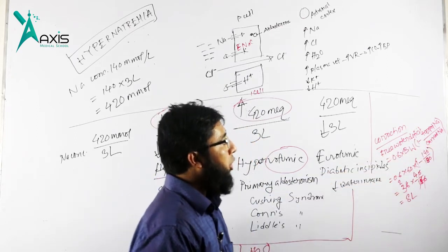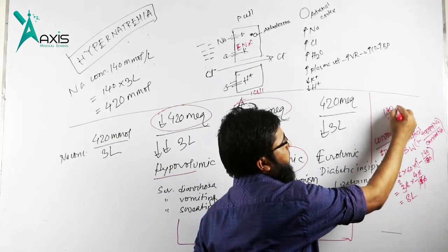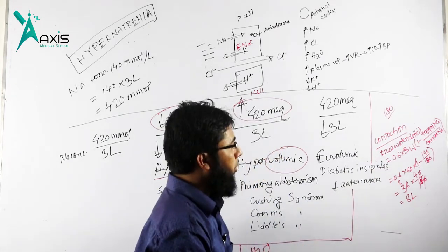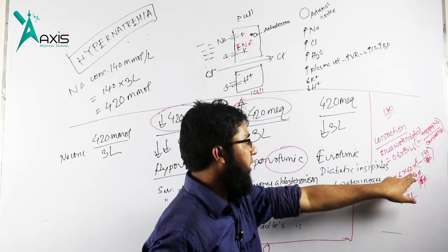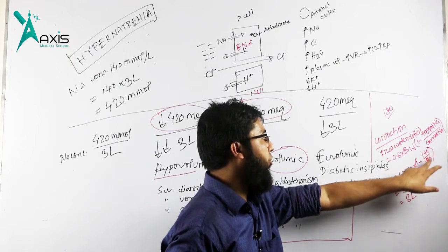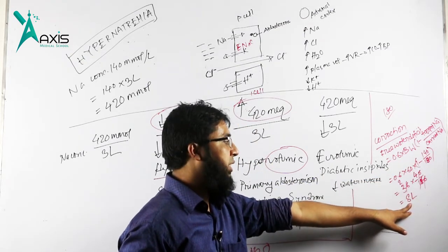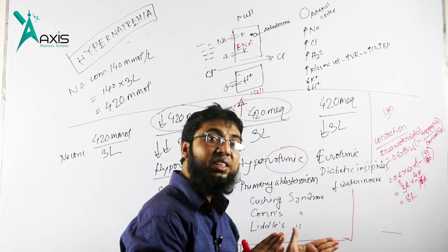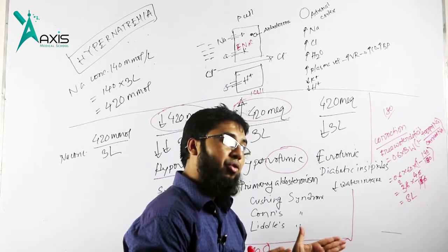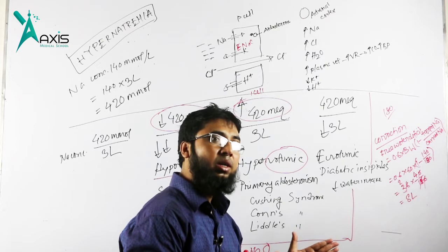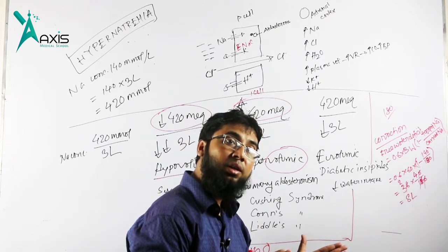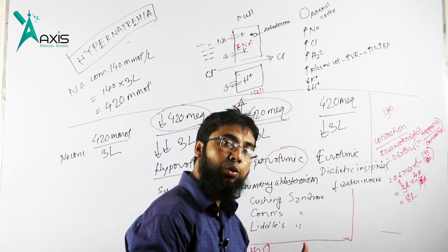Free water deficit in plasma equals 0.6 times body weight times 1 minus target sodium divided by current sodium. Suppose a patient's sodium is 180. So 0.6 times body weight, that is 60, times 1 minus 140 divided by 180. The calculation gives 8 liters. So this 8 liter free water, sodium-free water, that is dextrose in aqua should be given.